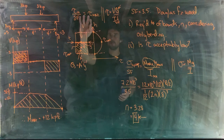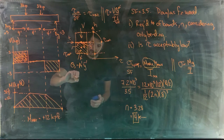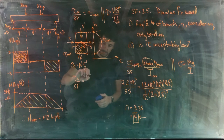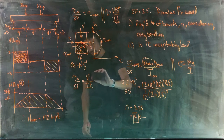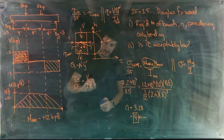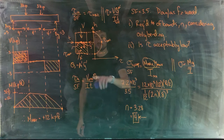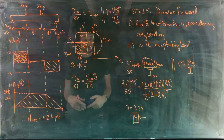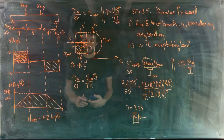We set up our equation: ultimate shear strength divided by safety factor equals VQ / (It), using the maximum internal shear force and choosing Q to give the maximum shear stress.